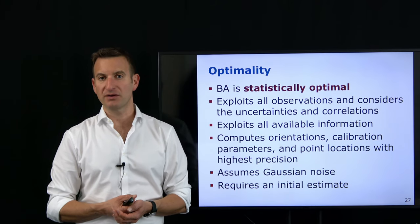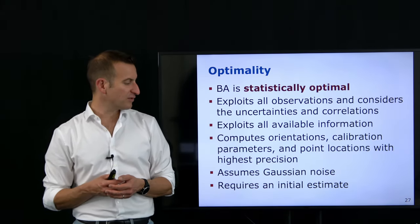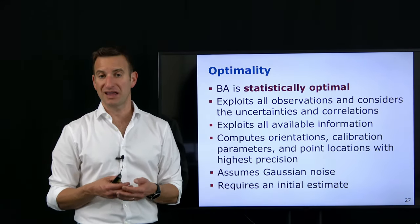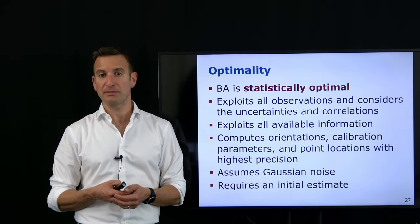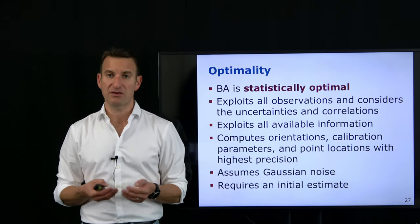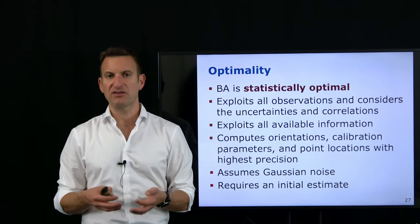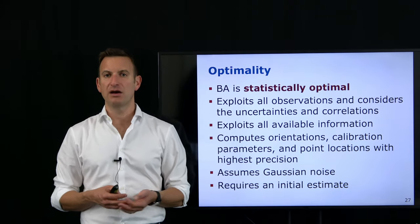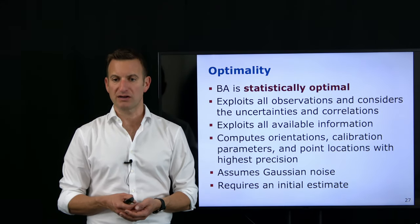This initial guess matters: if you have a very bad initial guess, the adjustment is unlikely to converge. So we need to invest some effort and possibly use additional sensors to get a good or reasonable initial guess and be able to converge to the right solution.